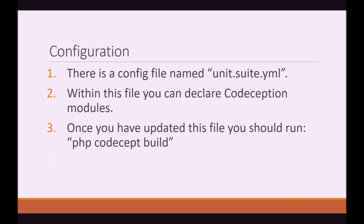So configuration — there is a config file named unit.suite.yaml. Within this file, you can declare Codeception modules. Once you have updated this file, you should run php codecept build.